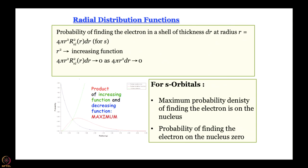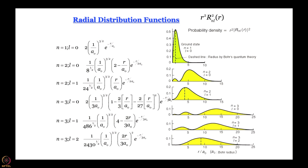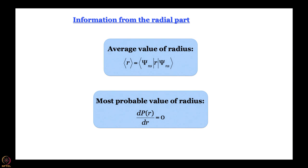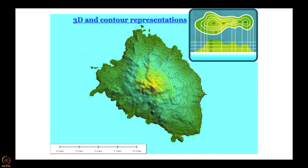We will plot the radial distribution functions one by one — we have already shown you the result, and today we will plot them in front of you. The information from the radial part includes the average value of radius and most probable value of radius, and of course energy. When we go to the angular part we will talk about the angular distribution function as well. The way we represent this is by using a three-dimensional representation, and since drawing on paper requires contours, that is the most convenient approach.